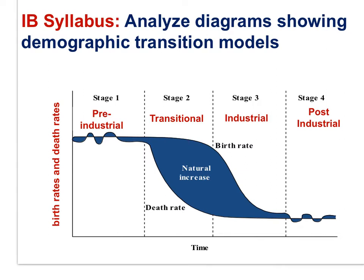In the transitional stage, death rates decline but birth rates remain high. Notice what happens to natural increase rate — the population grows rapidly. In the industrial stage, birth rates begin to decline and the population growth slows because the natural increase rate is declining. In the post-industrial stage, birth rates and death rates are both low, possibly even with higher death rates than birth rates — no growth, if not negative growth.